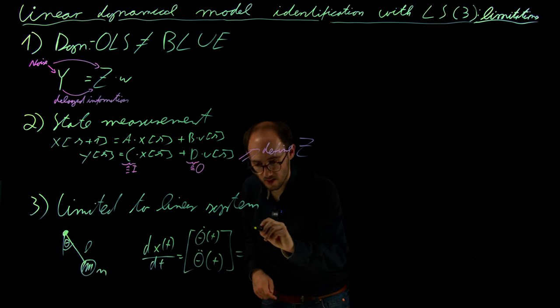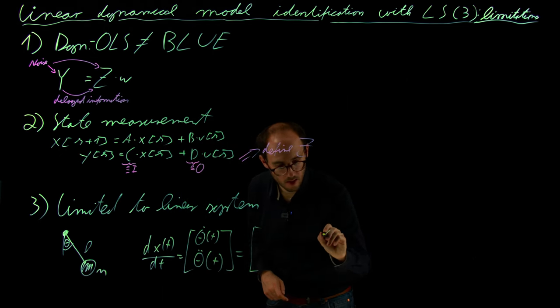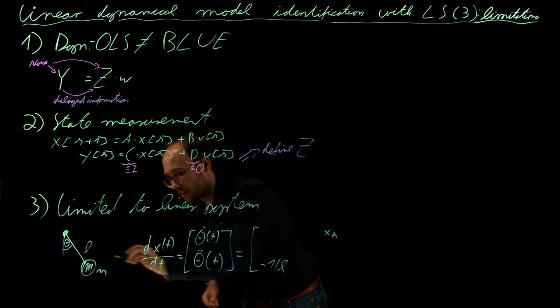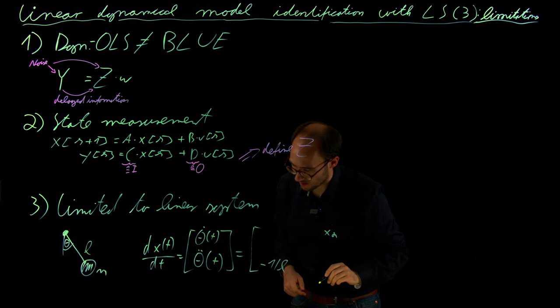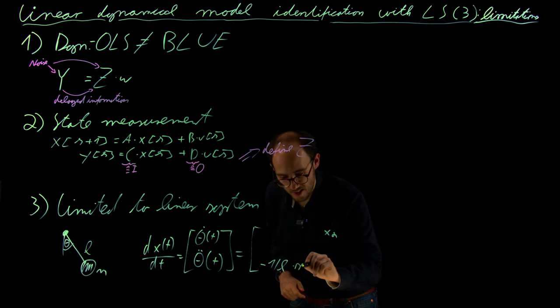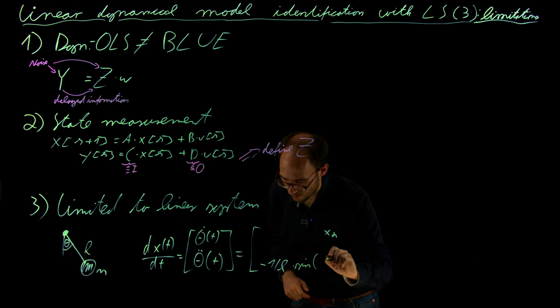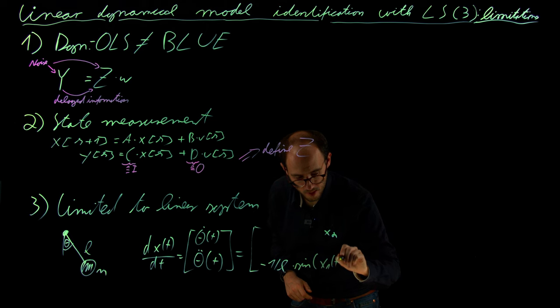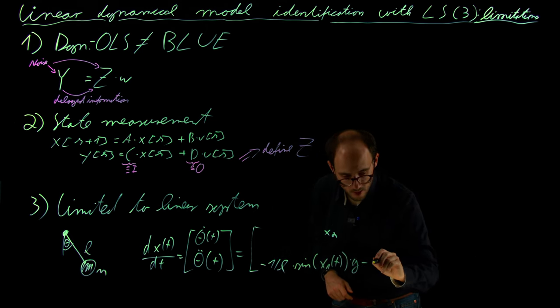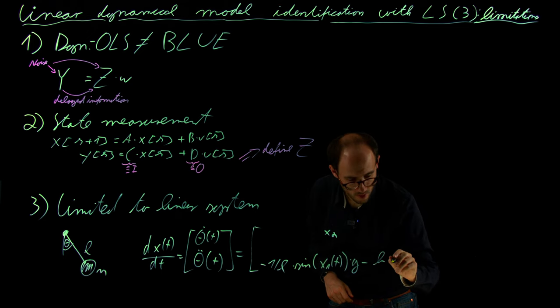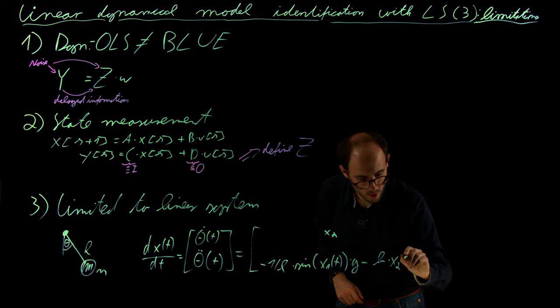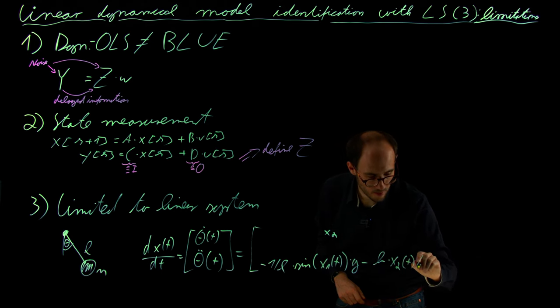Which was x2 and minus 1/L. L was the length of this rod from some middle point, times sine of x1(t) times g minus b, some drag coefficient, times x2(t) divided by m.